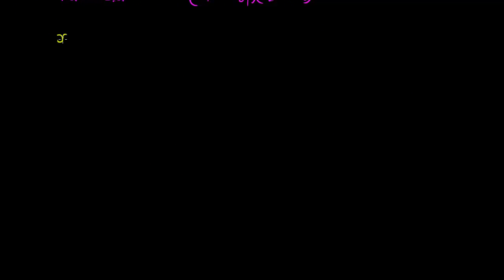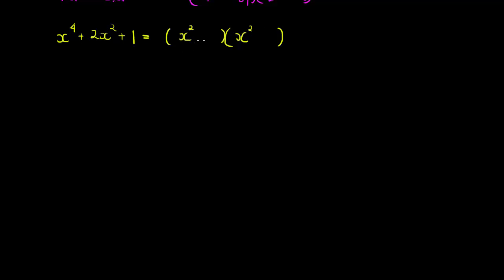For example, if I had x⁴ + 2x² + 1, I've got three terms and the leading term's exponent (4) is double the middle term's exponent (2). That means I might be able to factorize into two brackets. The unknowns in those brackets will have the same exponent as the middle term — x squared — and both constants will be +1, because 1 × 1 = 1 and 1 + 1 = 2.